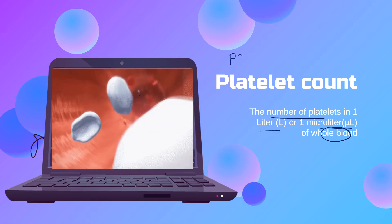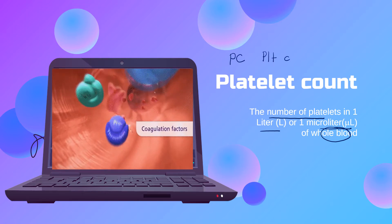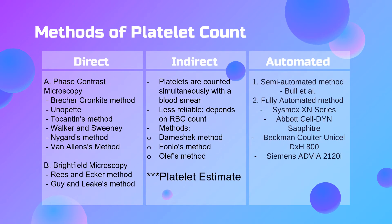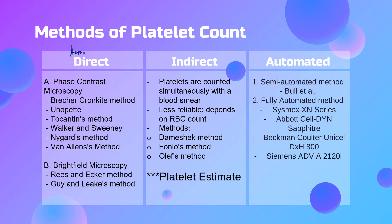Platelet count is sometimes abbreviated as PC or PLT CT. There are different methods in performing a platelet count: the direct, indirect, and automated methods. The direct method uses the hemocytometer, which is why it is also referred to as the hemocytometer method. Under the phase contrast microscope, there are six different methods, and the Brecker and Cronkite method is considered the reference method for platelet count.